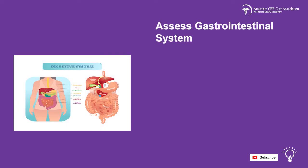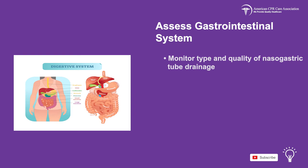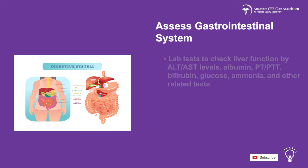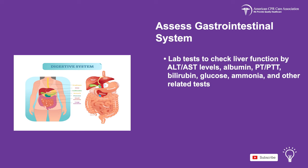Now turn your attention to the gastrointestinal system. Monitor the type and quality of nasogastric tube drainage. Conduct a physical abdominal examination and check the sounds, girth, and tightness of intestines and bowels. Get lab tests to check liver function by ALT levels, albumin, PT, bilirubin, glucose, ammonia, and other related tests.